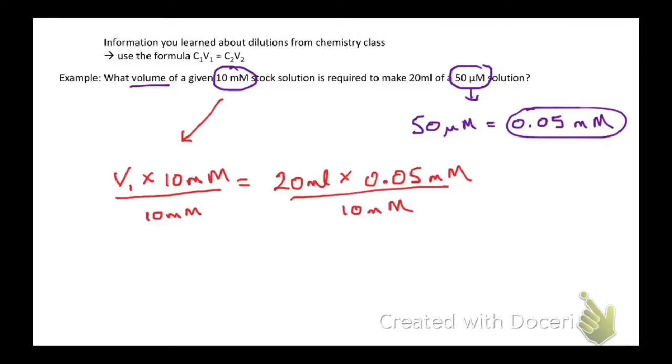V1 times 10 millimolar equals 20 mils times 0.05 millimolar. Next, we're going to divide both sides by 10 millimolar, which allows us to cancel and simplify the right-hand side of the equation.